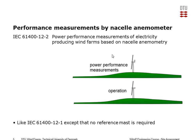This is the IEC dash-12-dash-2 standard, which is a little different from the usual power performance measurement standard, because you don't have any reference mast in front of the turbine. You're doing the reference measurements by anemometers on the nacelle, so the question is not so much about whether you need a site calibration or not, but about the uncertainties of these measurements.